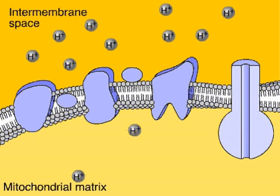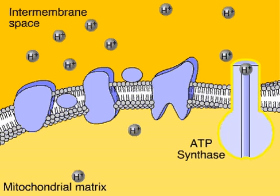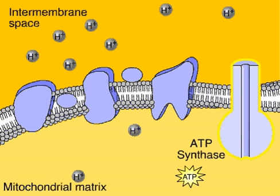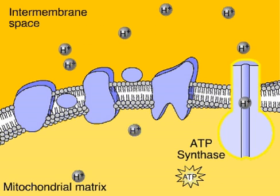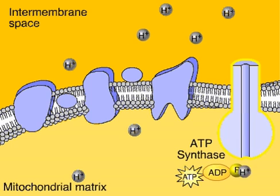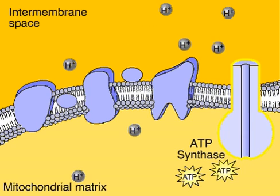The backed-up hydrogen ions give up their energy when they diffuse through a special protein complex in the membrane called ATP synthase. As hydrogen ions flow down their concentration gradient, ATP synthase captures their energy to make ATP. This mode of ATP production is called chemiosmosis.